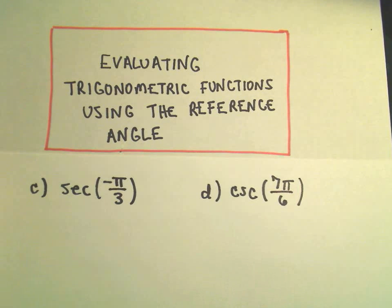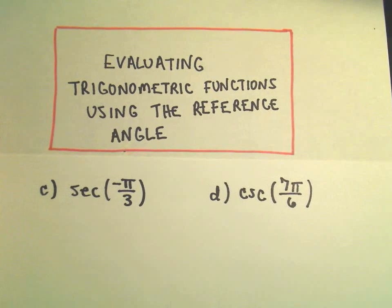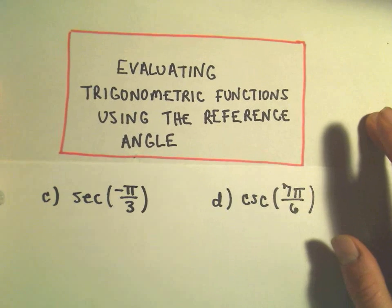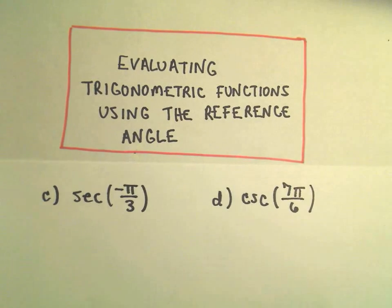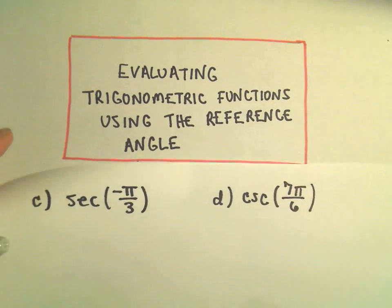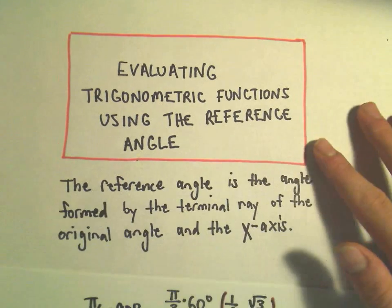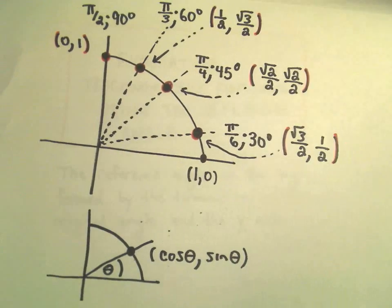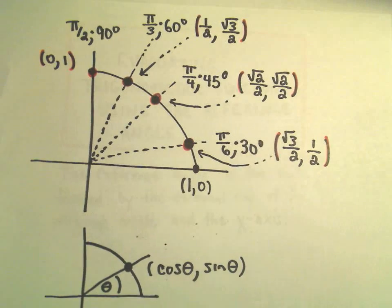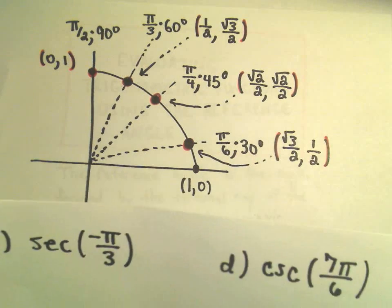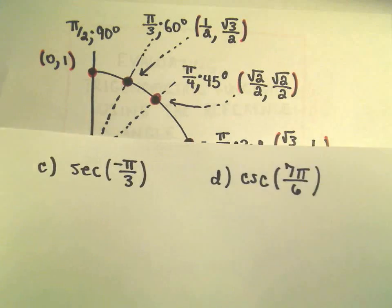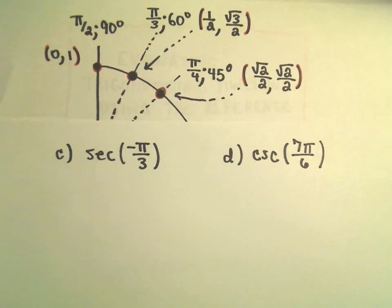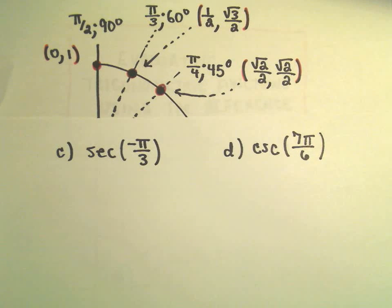Alright, so two more examples here of evaluating trig functions using the reference angle. I'm going to make use of my first quadrant unit circle. So let's figure out in the first case here: secant of negative pi over 3.